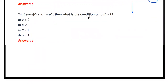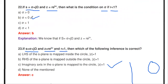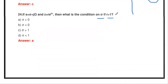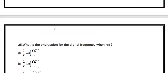The next question: if s = σ + jω and z = r·e^(jω), what is the condition on σ if r > 1? If r < 1, then σ < 0. If r > 1, then σ must be greater than zero. That is the condition.